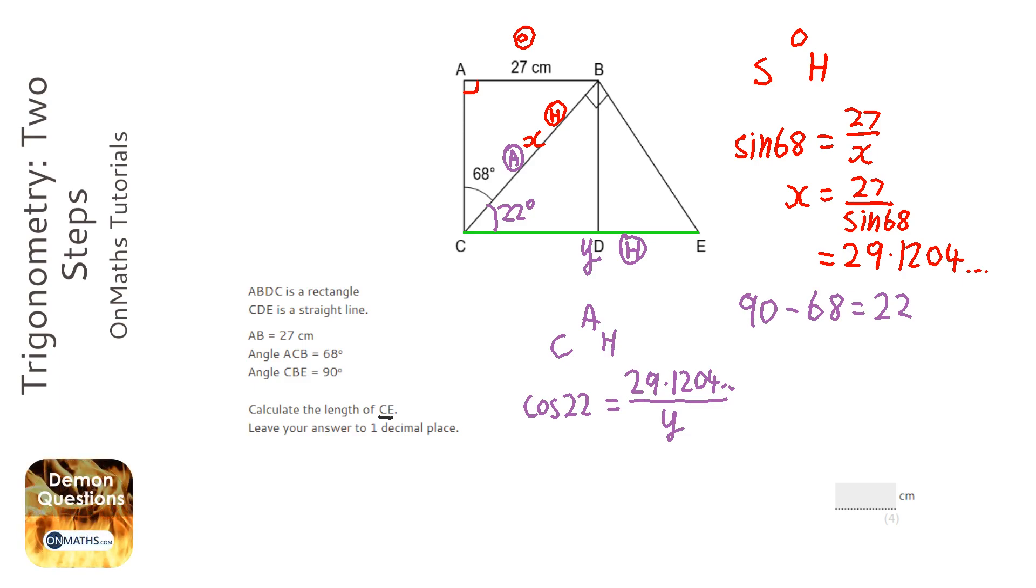Now I kept that in my calculator, so I can just press divided by cos 22, press equals, and it's 31.4074.